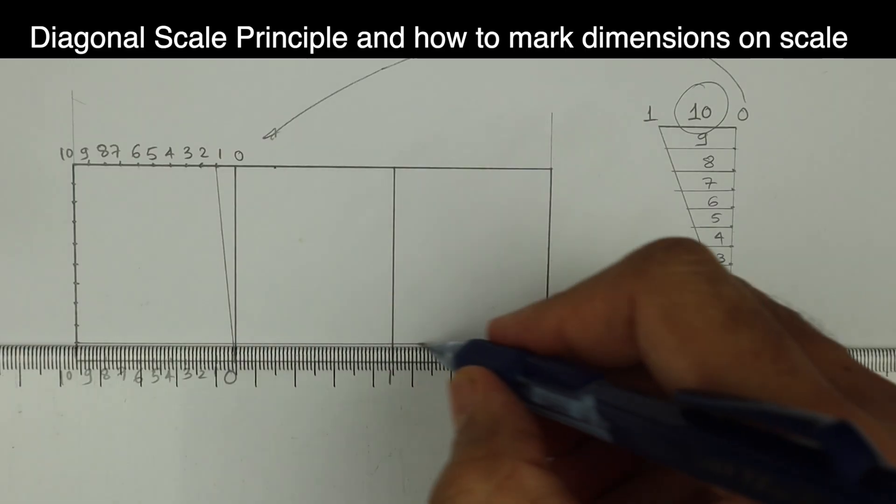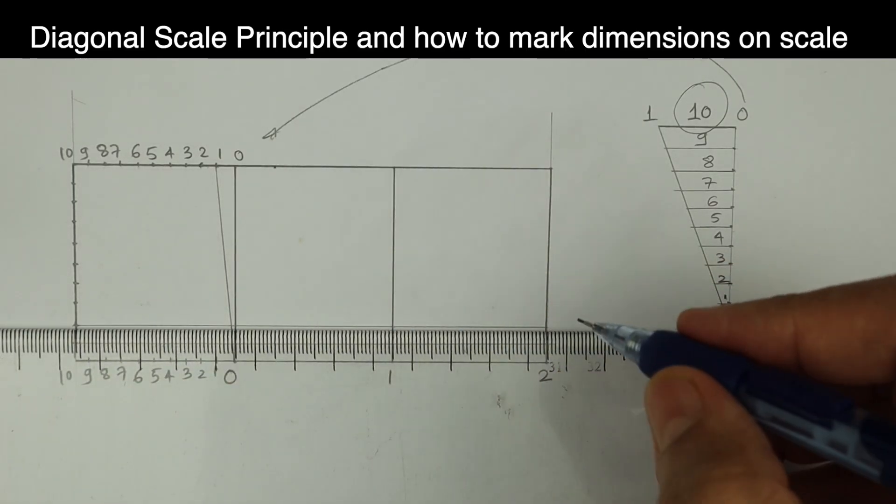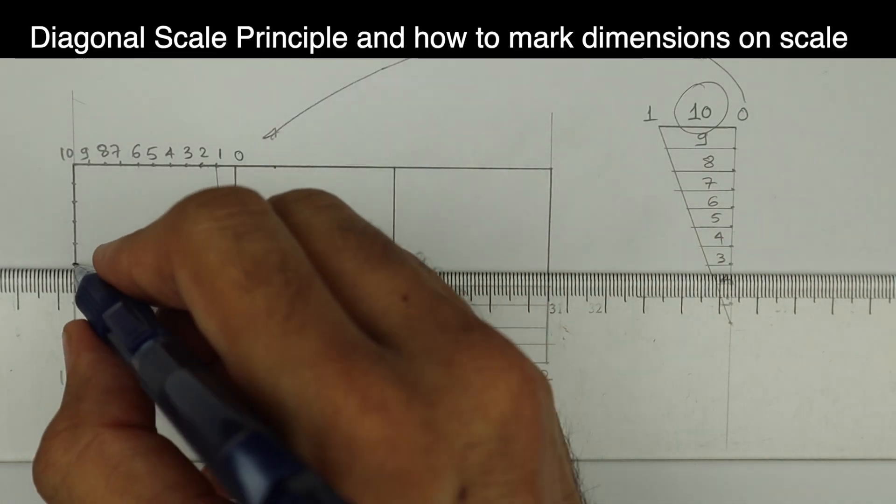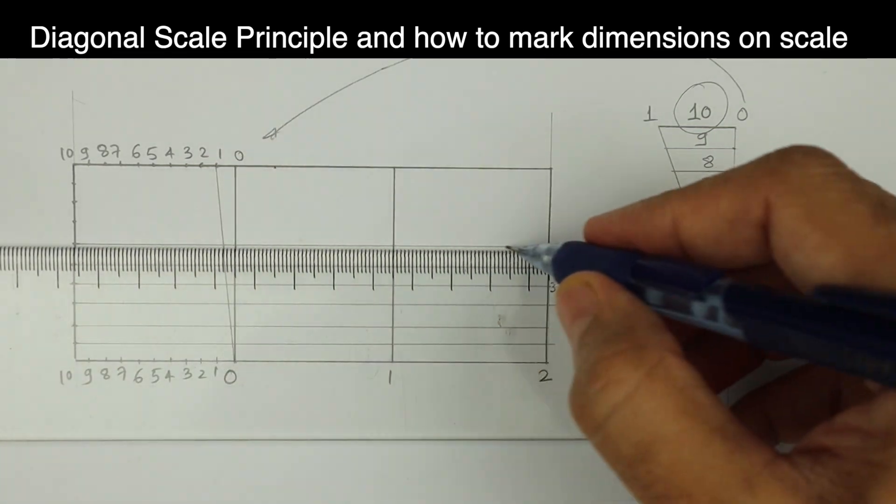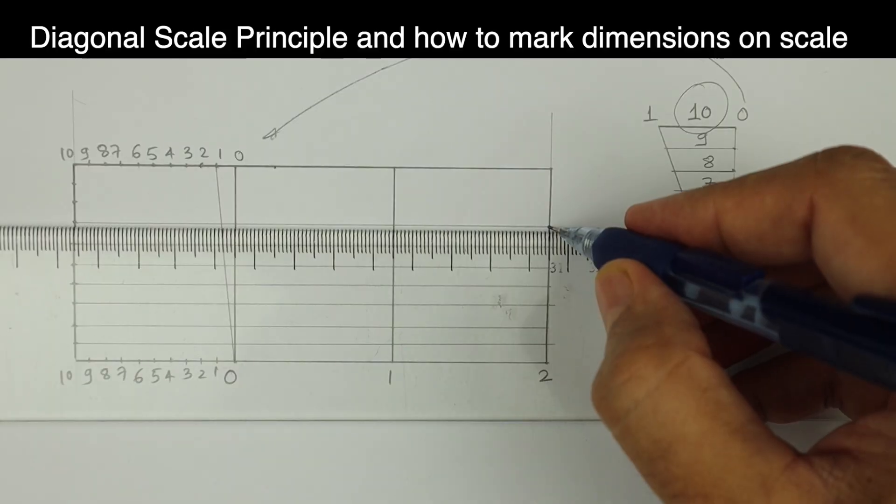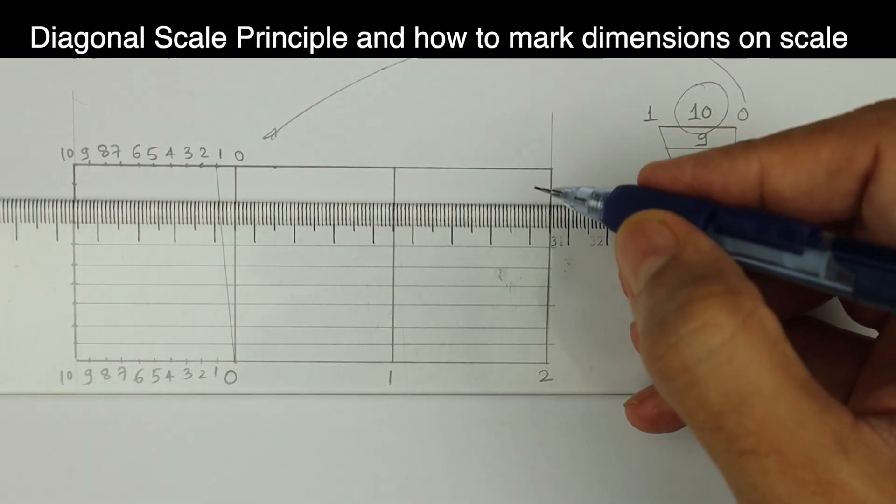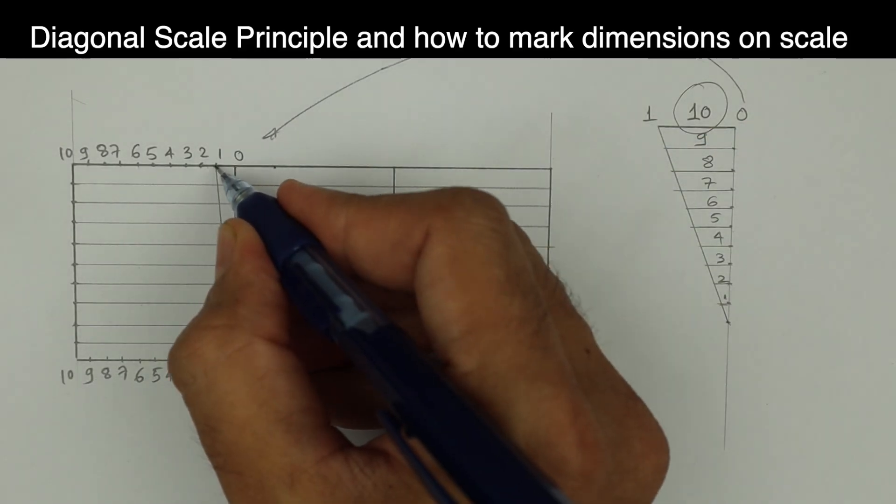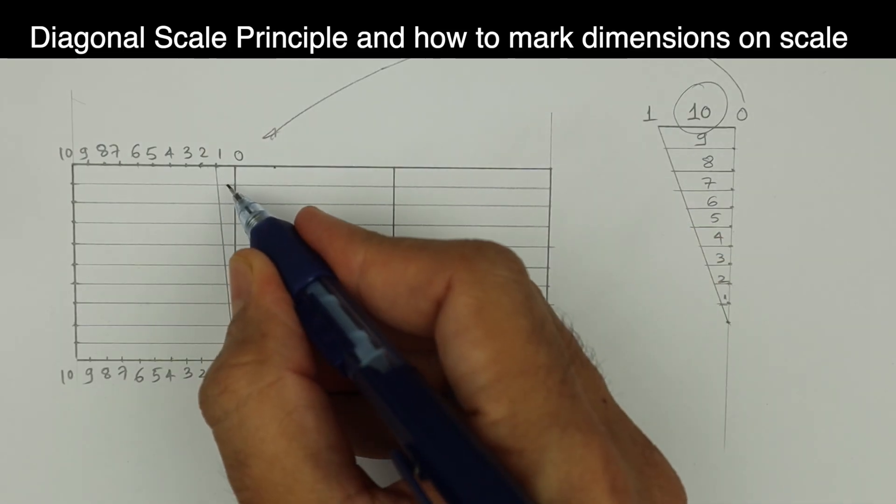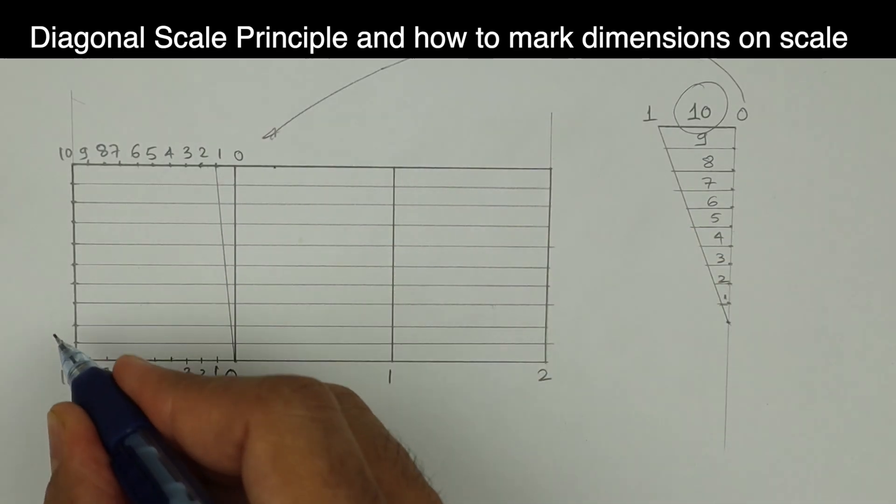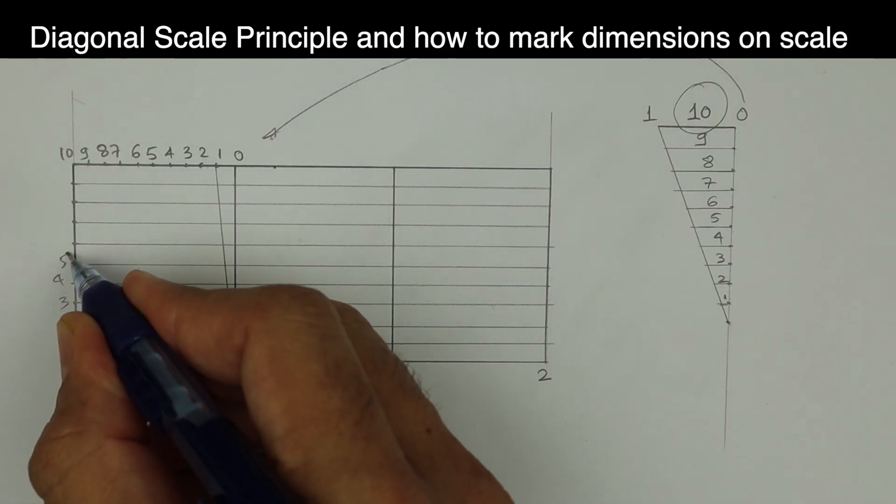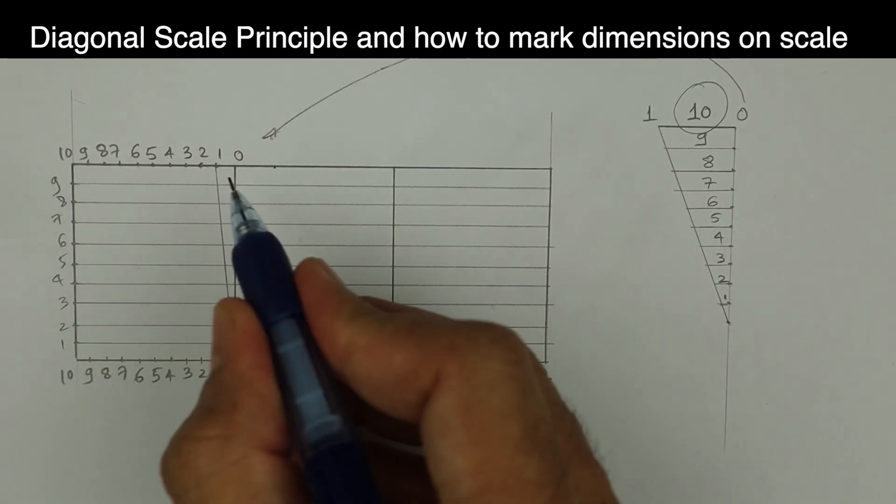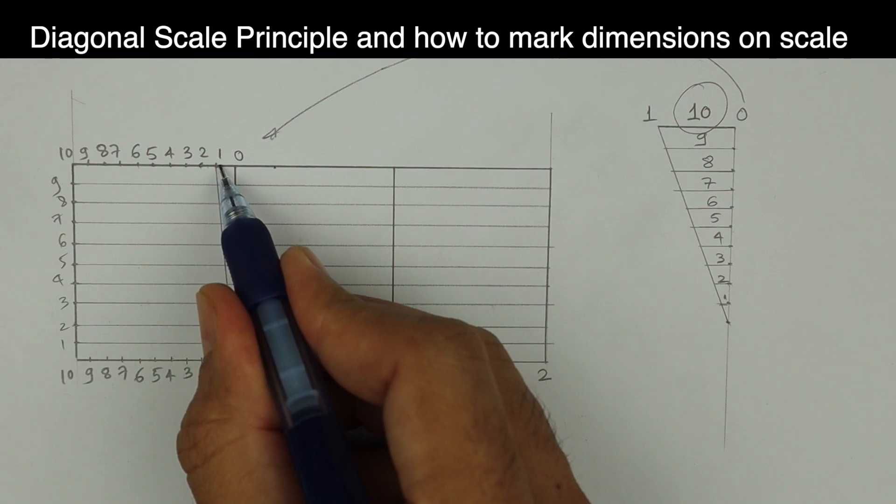Then I will draw horizontal lines. This 1 is here. Right, this is 8. So I can write 1 to 10 like this. So this is 9, this is 8, this is 10.